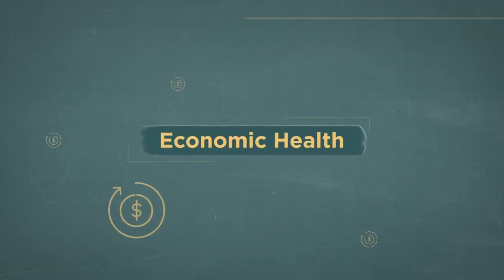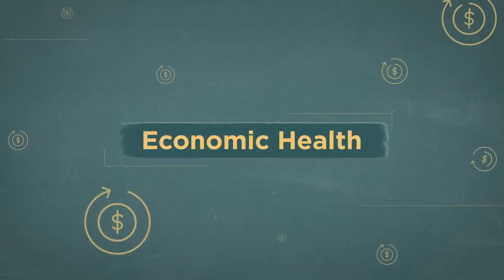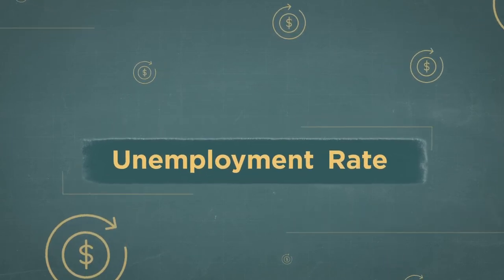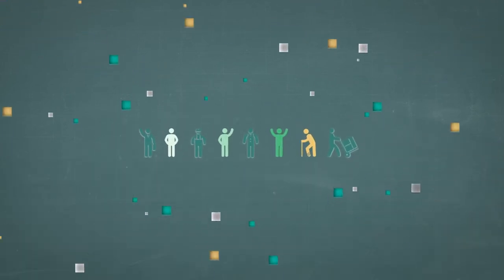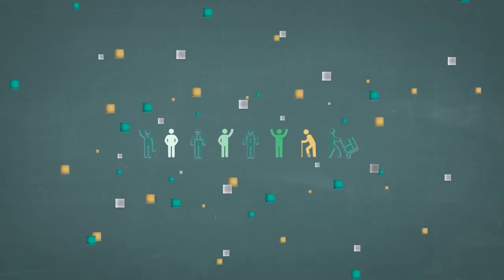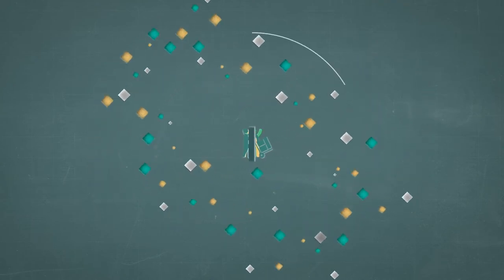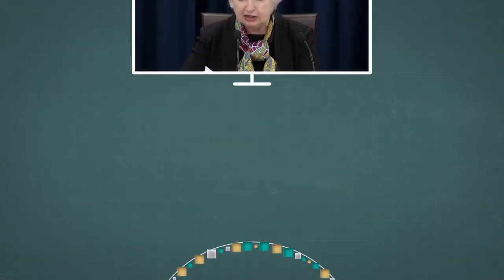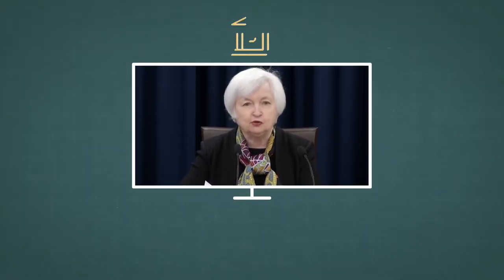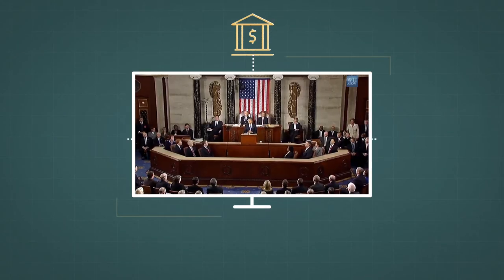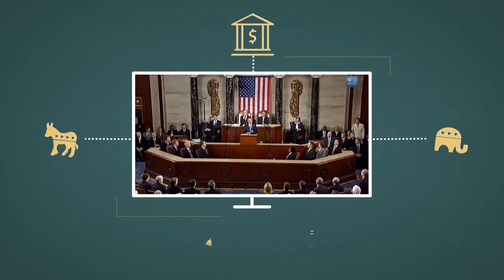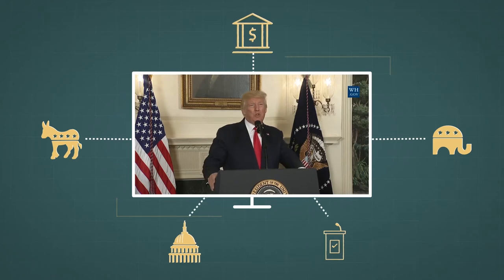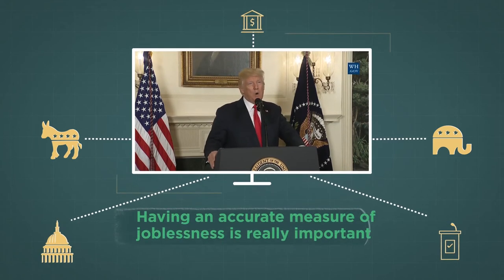One of the most important measures of economic health is the unemployment rate. Behind this single number are millions of people looking for a new way to make a living. It also helps us shape effective policies. The Federal Reserve uses it to steer the economy. Jobs are often the defining political issue for Congress and the President. That's why having an accurate measure of joblessness is really important.